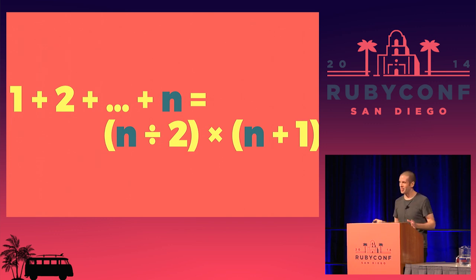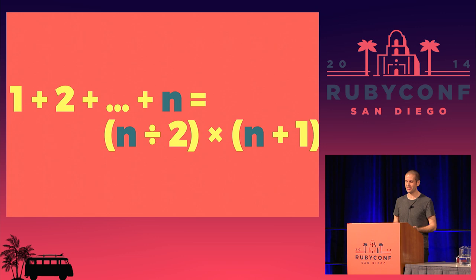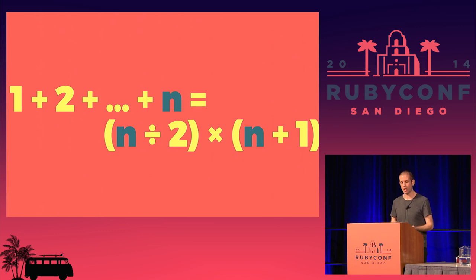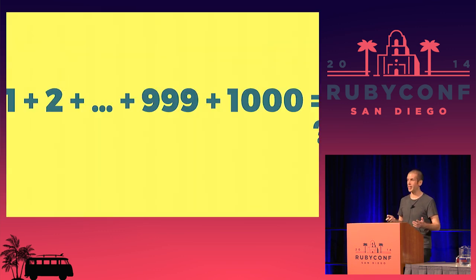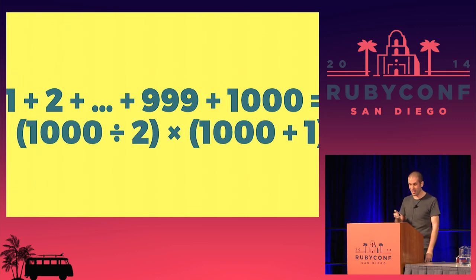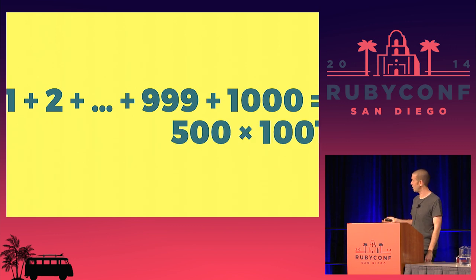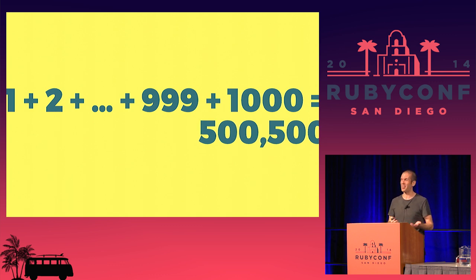Now, can you remember all the details of that argument and why it must be true? If not, it doesn't matter — you don't need to remember the details, you just need to know this formula. It's a pattern, an abstract tool you can use even if you don't know why it works. So, quick — what's 1 plus 2 plus 3 all the way up to 1,000? Well, it's half of 1,000 times one more than 1,000, which is 500 times 1,001, which is 500,500. Pretty impressive. Well done, everyone.